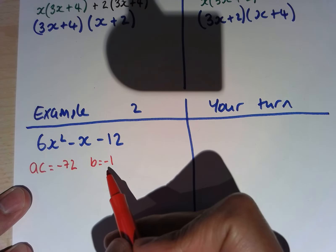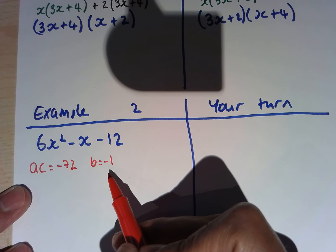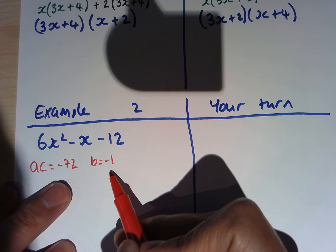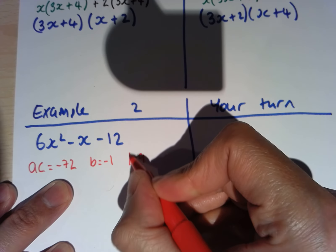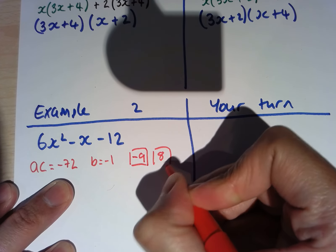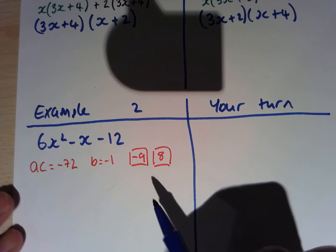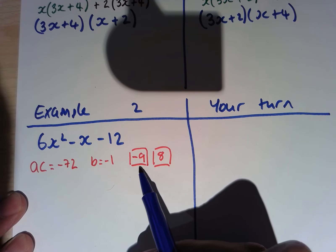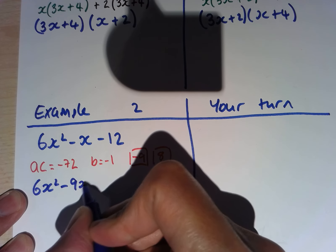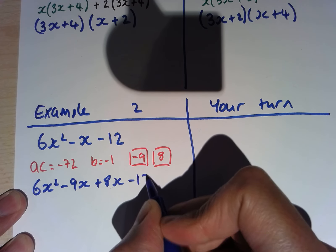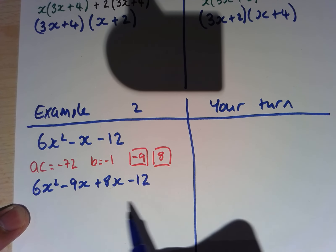My B value is negative 1. I want a pair of numbers that have a product of negative 72 and a sum of negative 1. Those two numbers are negative 9 and 8. So we're going to partition this negative x into a negative 9x and an 8x. We get 6x squared, take away 9x, plus 8x, take away 12. It doesn't matter which way around you have this — either way you'll end up with the same final answer.